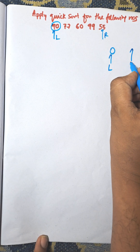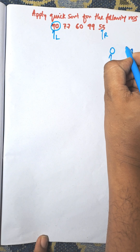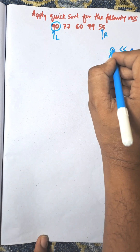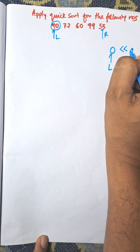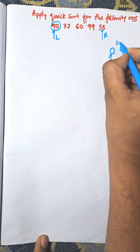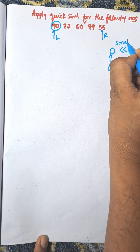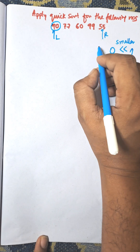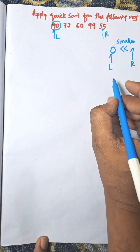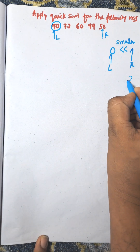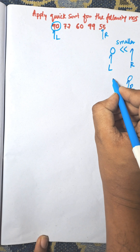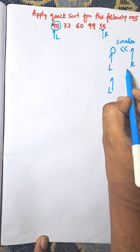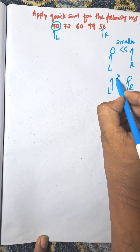The rule is: when the pivot is in the leftmost position, we search from right to left and find an element smaller than the pivot. When the pivot is in the rightmost position and the pointer is at the leftmost, we move left to right and search for a bigger element than the pivot.